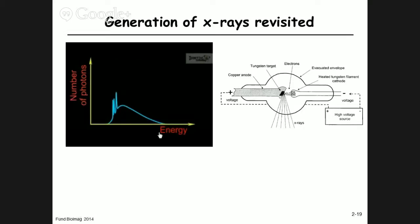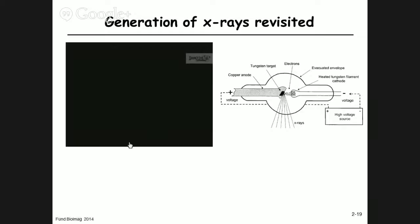Now we have energy instead of wavelength on the axis. The conclusion is: as you increase the current, the intensity of the photons increases, so in the graph everything just increases.